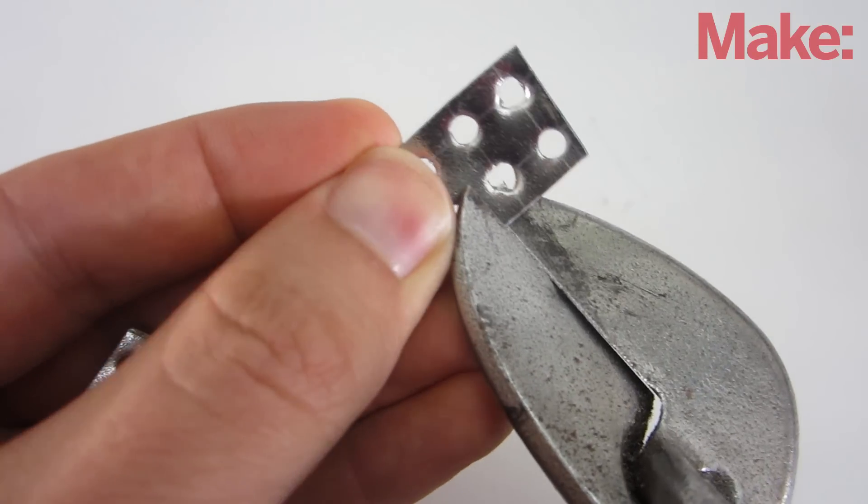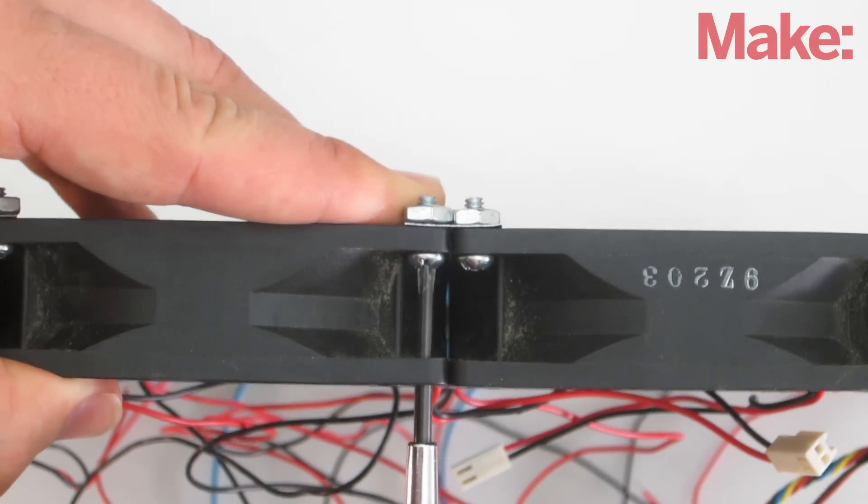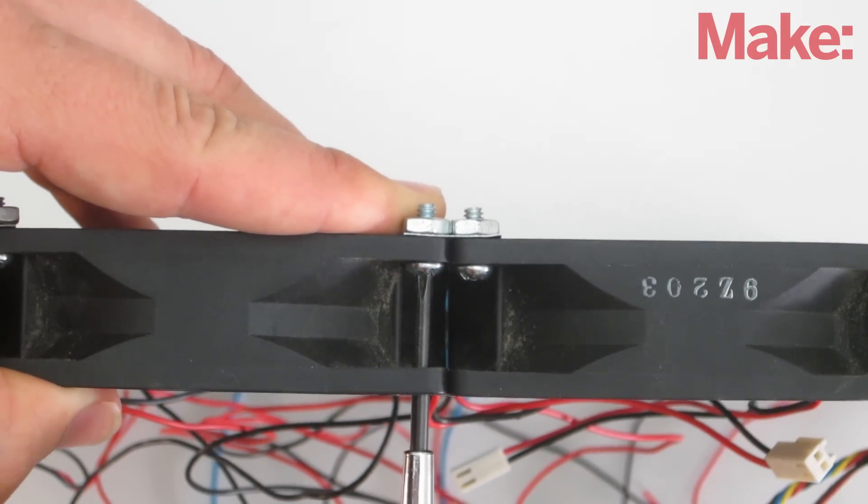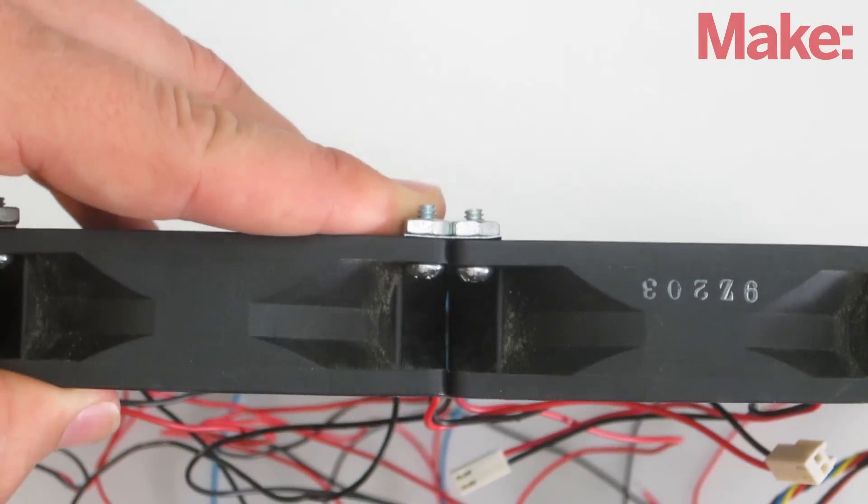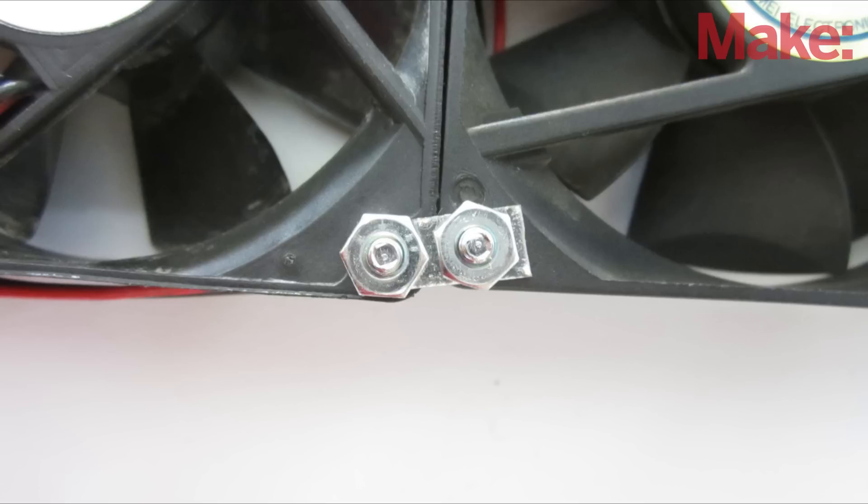Repeat this until you have enough brackets to hold all the fans together. To attach the fans, insert a small machine screw through the mounting hole in the fan and attach the bracket with a nut. Continue adding fans and brackets until they're all connected. The outside holes can either be left empty or connected with a half bracket.